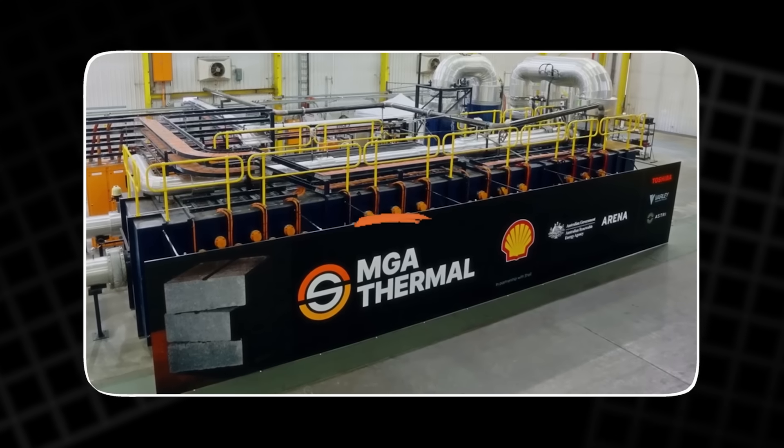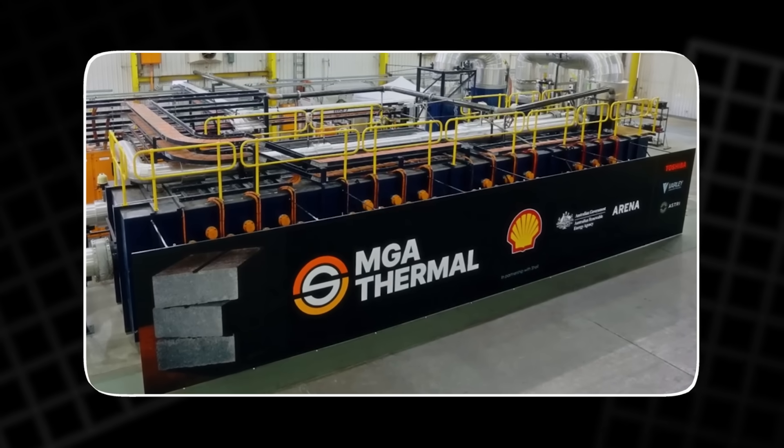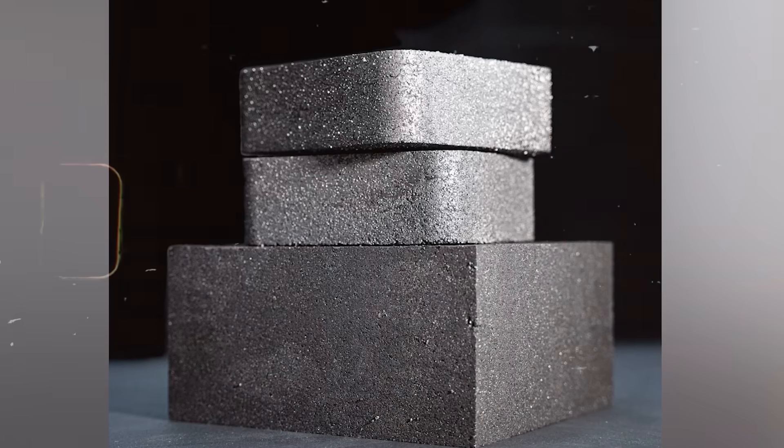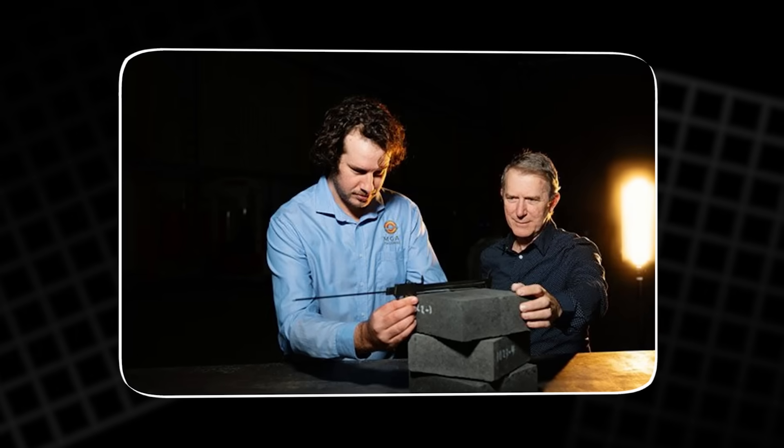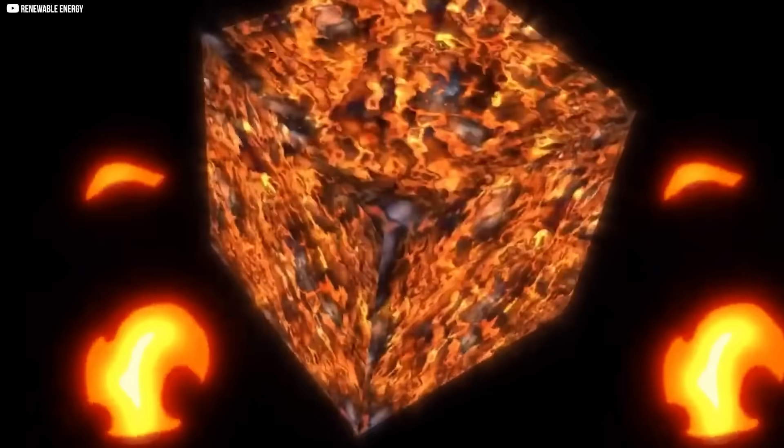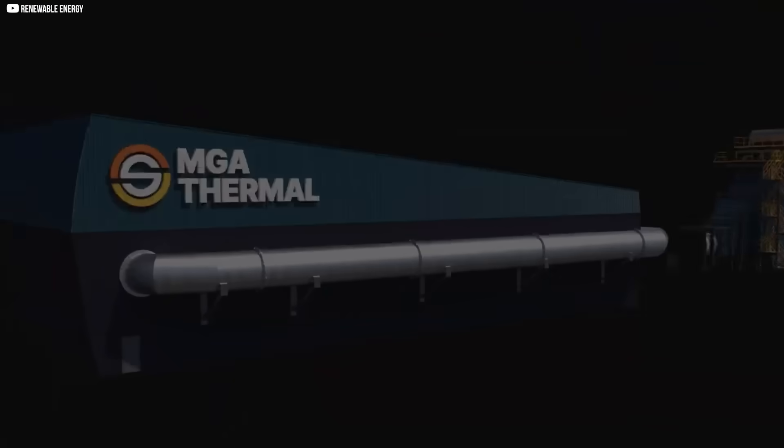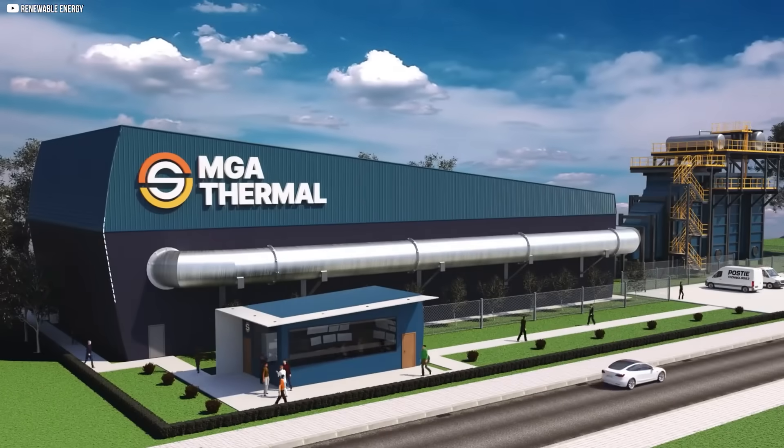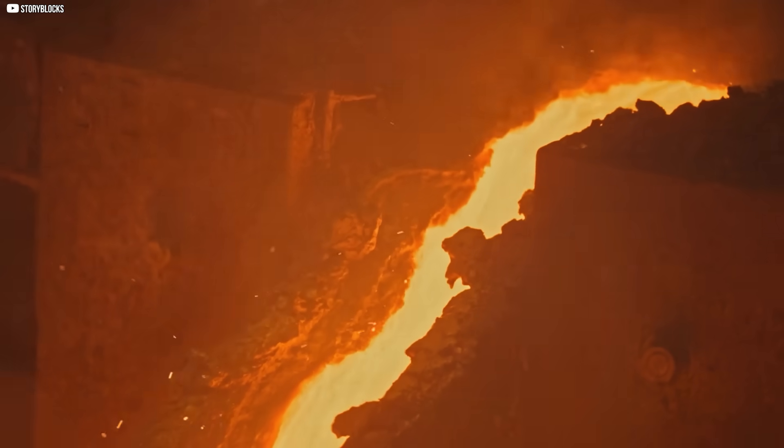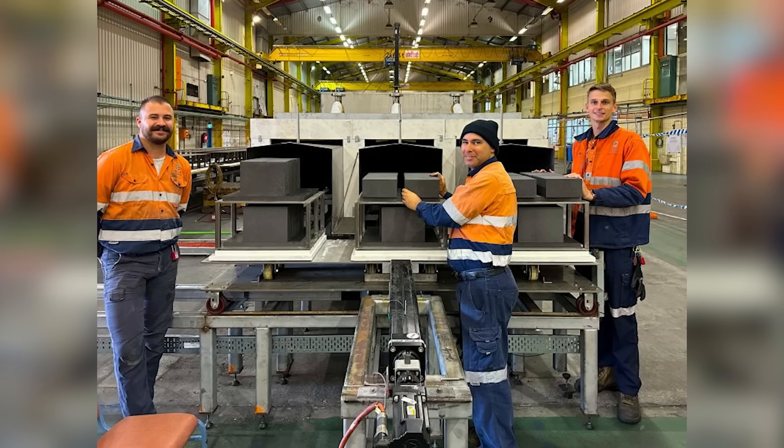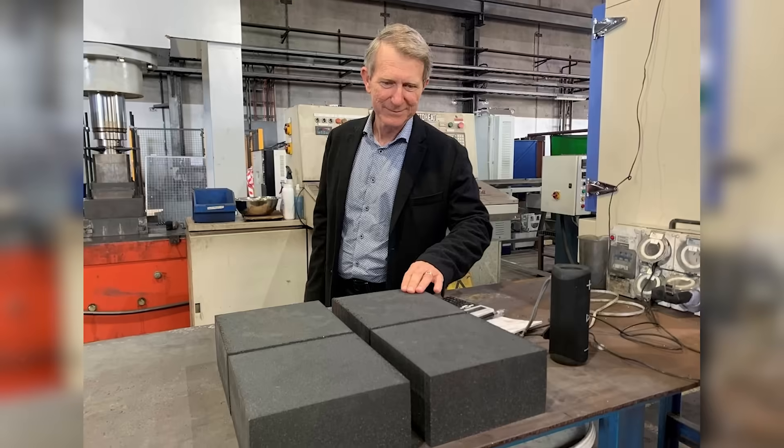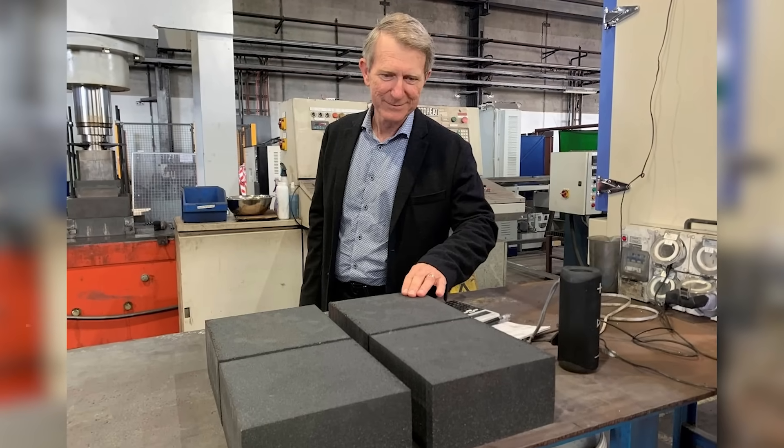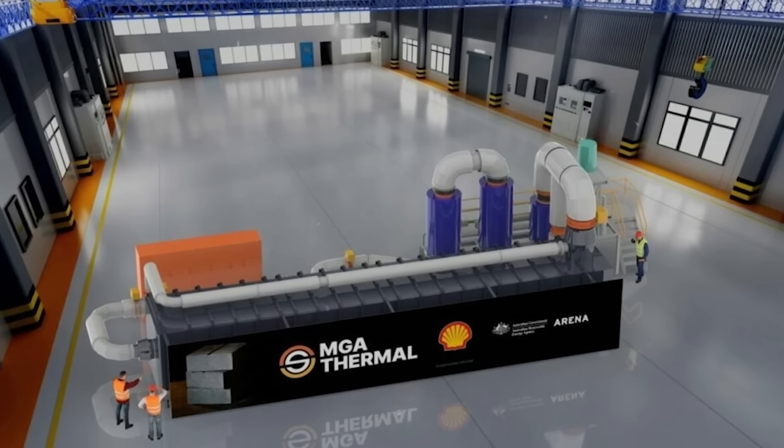The heart of this block is MGA. Miscibility Gap Alloy. A custom blend of metals crafted so that they never fully combine. Instead, as the temperature rises, part of the alloy melts while the rest stays solid. This strange behavior unlocks latent heat storage. Vast amounts of energy absorbed during the melting phase without the block itself falling apart.